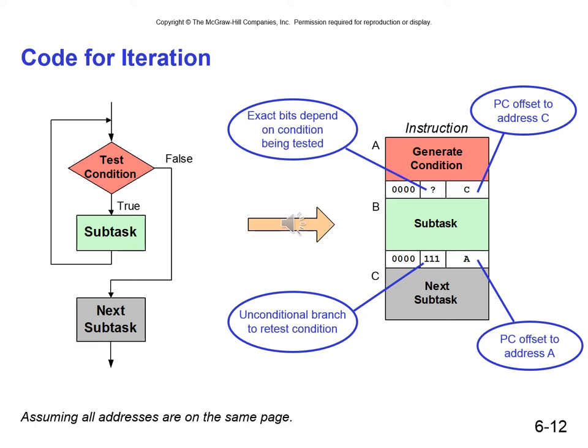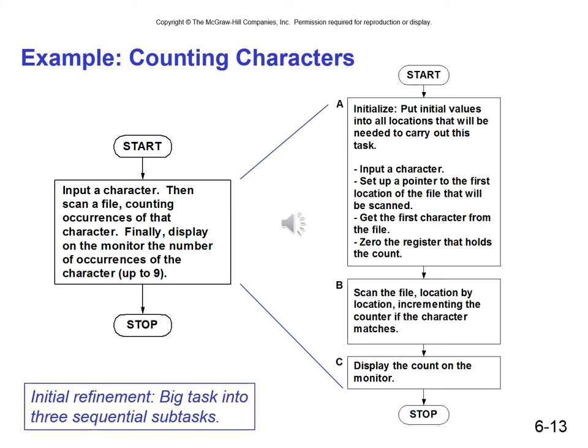Going back to our example of counting characters: we start by initializing the machine, putting initial values in all locations needed to carry out the task. We input a character, set up a pointer to the first location of the file to be scanned, get the first character from the file, and zero the register that holds the count. Then we scan the file location by location, incrementing the counter if the character matches, and display the count on the monitor. This is the initial refinement — a big task broken into three sequential subtasks — and then we will further decompose the middle subtask using the constructs we've been discussing.